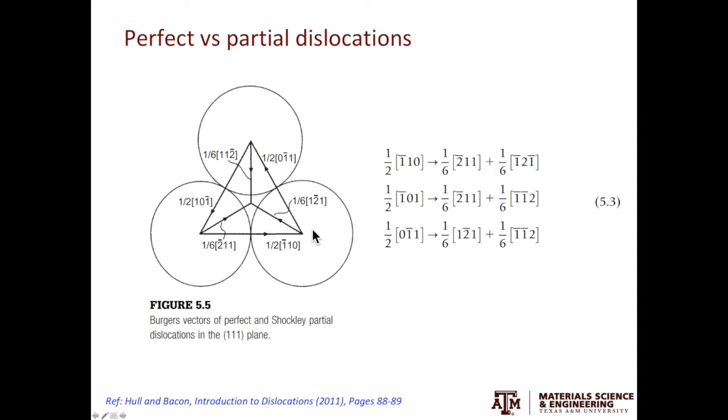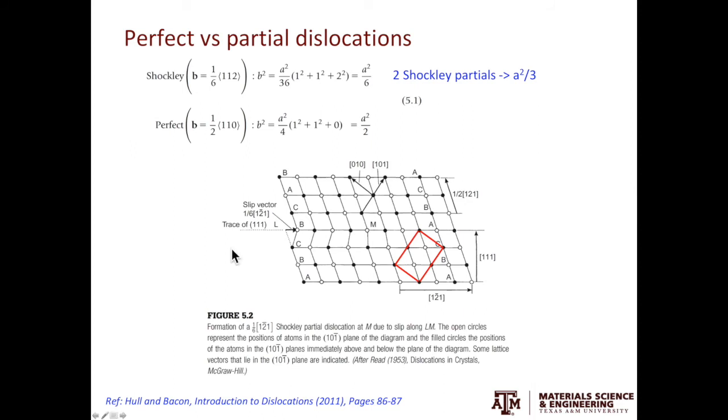If we look at the magnitude of full and partial dislocations, for full dislocations, it's half 110. And for partial dislocations, it's 1 over 6, 112. Now, let's ask ourselves a question. Is that more energetically favorable to have a full dislocation or to have two partial dislocations? If you recall the elastic properties of dislocations video, we learned the strain energy associated with dislocations is a function of gb squared, where g is the shear modulus, b is the magnitude of the Burgers vector.